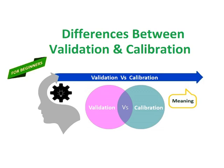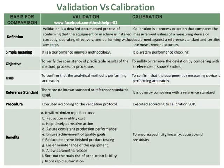Differences between Validation and Calibration. Validation is a detailed documented process of confirming that the equipment or machine is installed correctly, operating effectively, and performing without any error. Whereas calibration is a process or action that compares the measurement values of a measuring device or equipment against a reference standard and certifies the measurement accuracy.